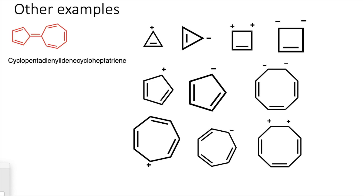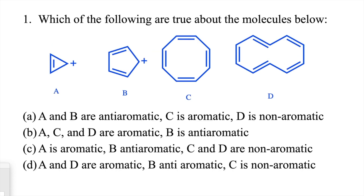This is how we draw conclusions about aromaticity and anti-aromaticity, knowing whether the structure remains planar or not. Moving to the next question: which of the following statements are true about these molecules? We discussed that this one is aromatic with two pi electrons, this one with four pi electrons is anti-aromatic. This molecule looks anti-aromatic, but we have to check if it is planar. This one looks aromatic, but we also need to verify planarity.